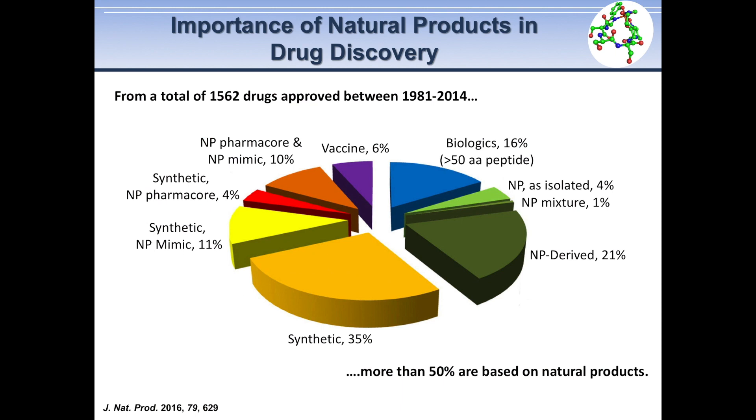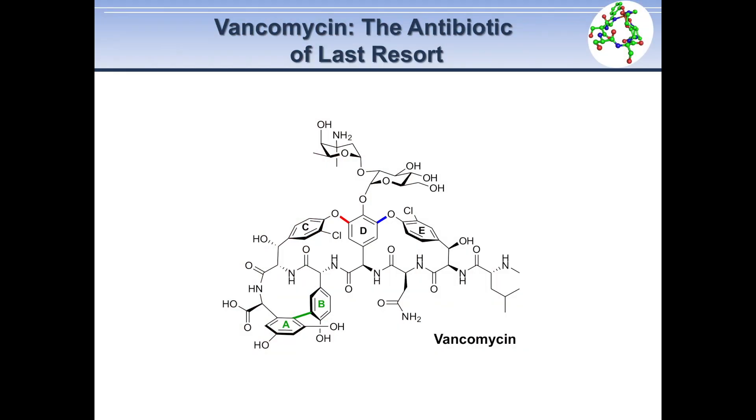Natural products have traditionally served as a very productive source of drugs and drug leads. For example, over 50 percent of the drugs approved by the FDA in the past 35 years and more than 70 percent of our current clinical antibiotics are based on natural products. And as part of the Camille Dreyfus Teacher Scholar program, I will explore one of the most important natural product antibiotics currently available, vancomycin.